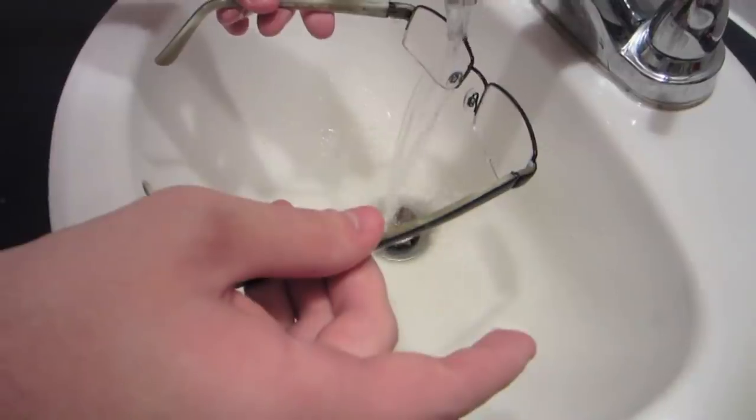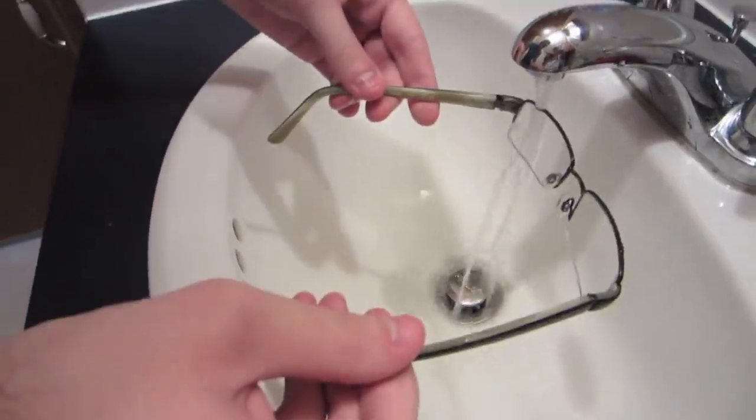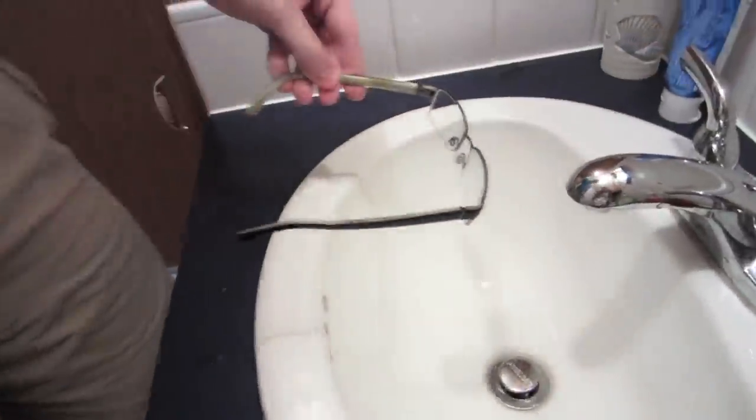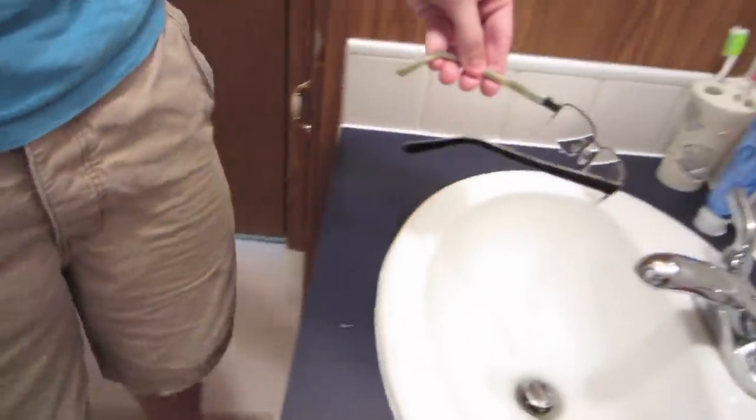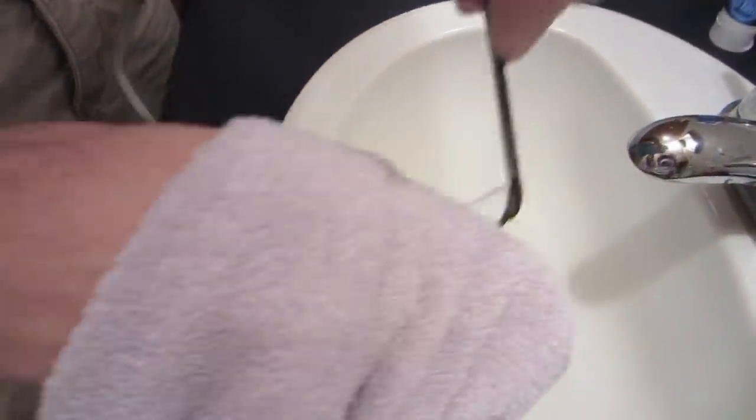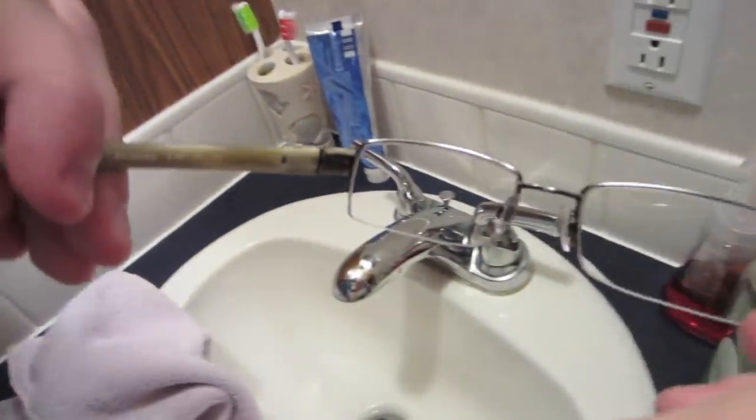You might have a few specks left. That's normal. Just run them under a few times. Then you take a towel or whatever works, and you just wipe off the bottom edges of these. And if there's any extra specks, you can just wipe that off.